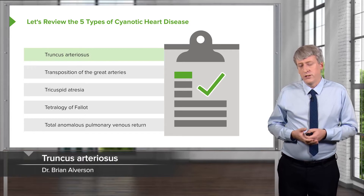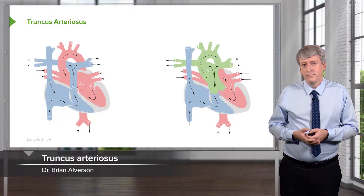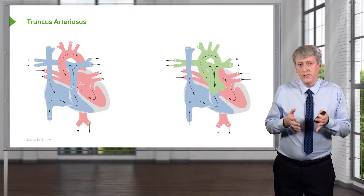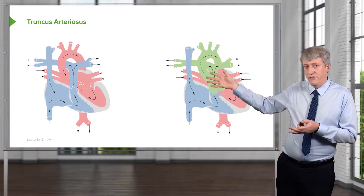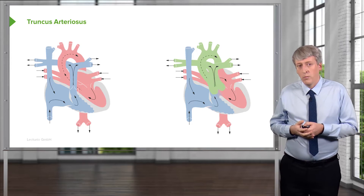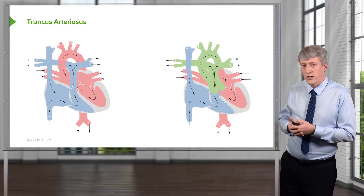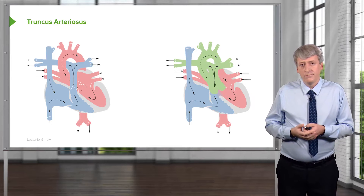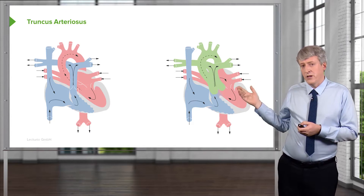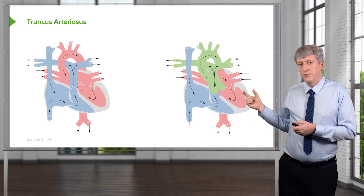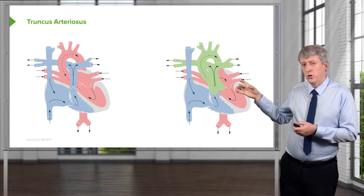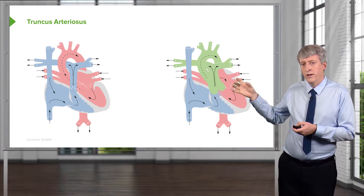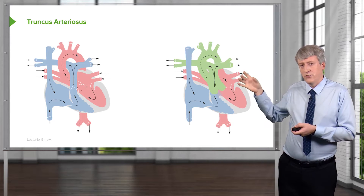First, truncus arteriosus. On the left side is a normal heart, and on the right side is a patient with truncus arteriosus. In this patient, the aorta and the pulmonary artery have merged together and formed one main trunk, and that trunk is sitting over a VSD.